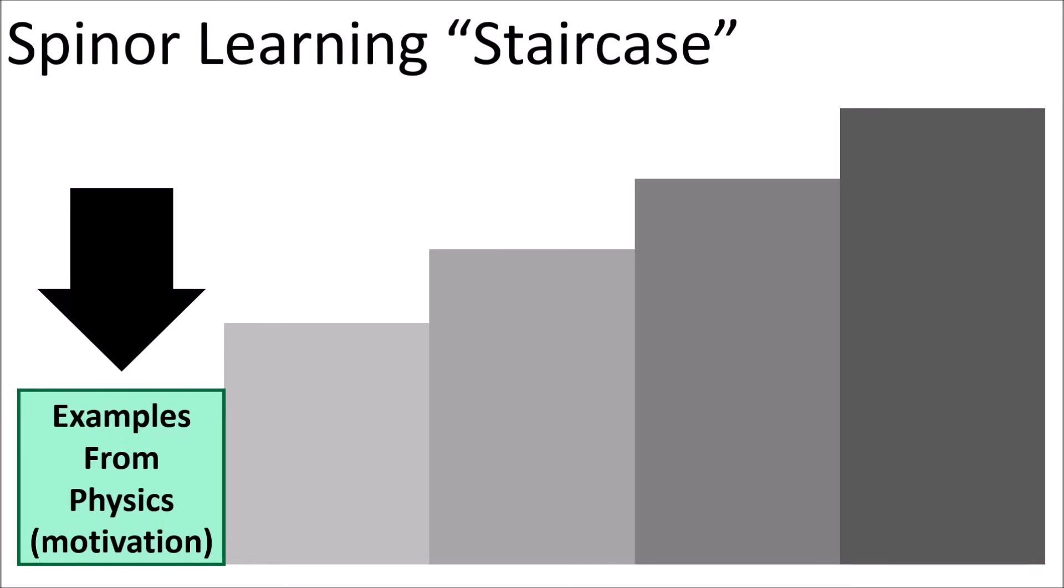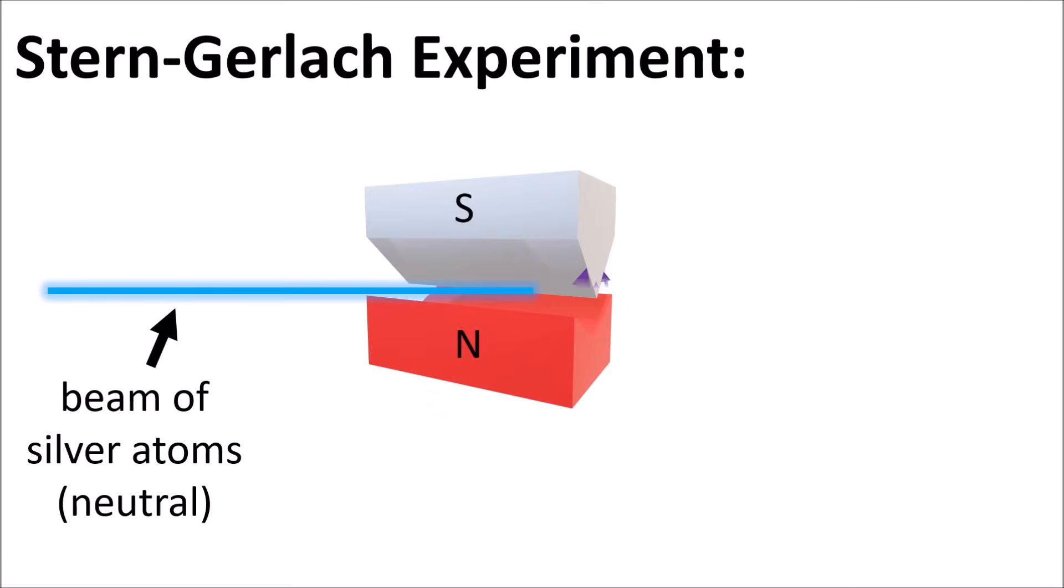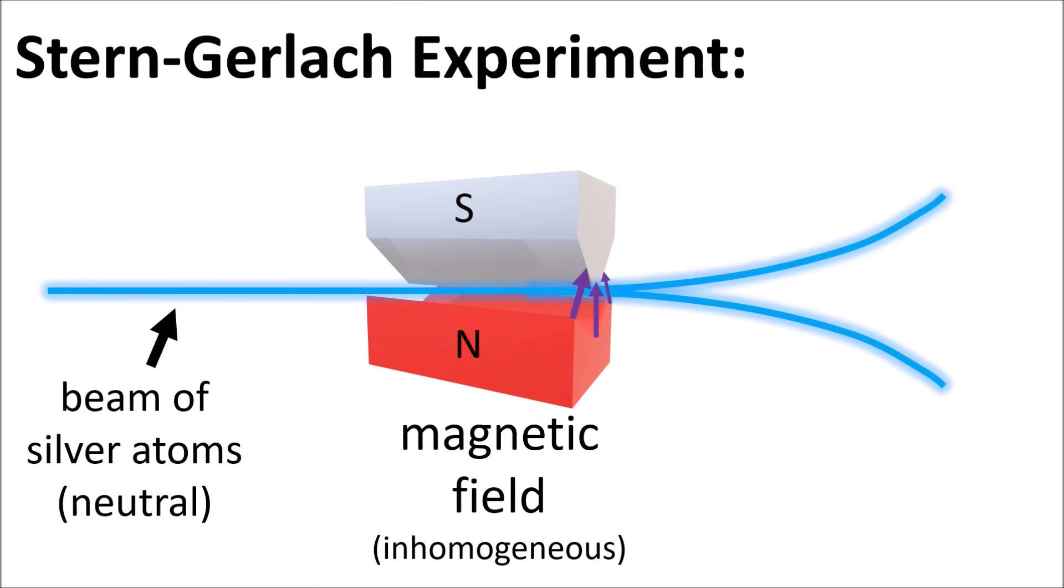A good place to start learning spinors are examples from physics, such as basic quantum spin states and the polarization of light waves. In introductory quantum mechanics, we learn that putting electrically neutral silver atoms through a magnetic field forces them to choose between one of two states, either spin up or spin down.